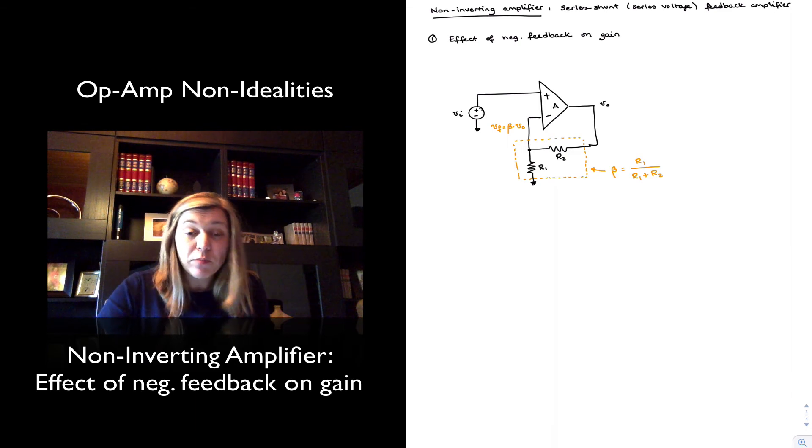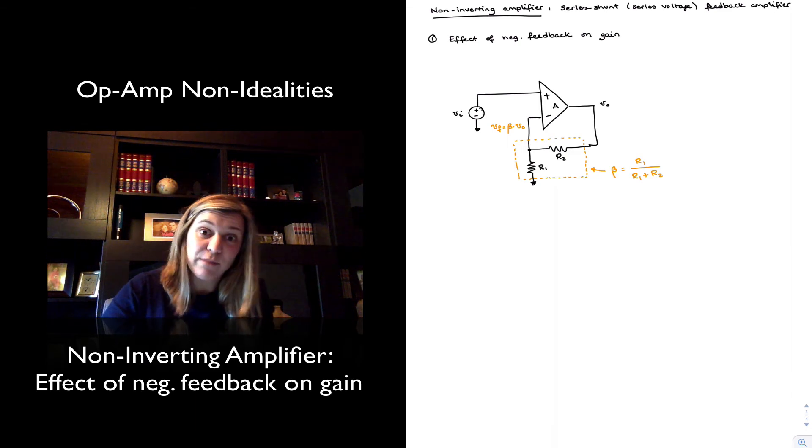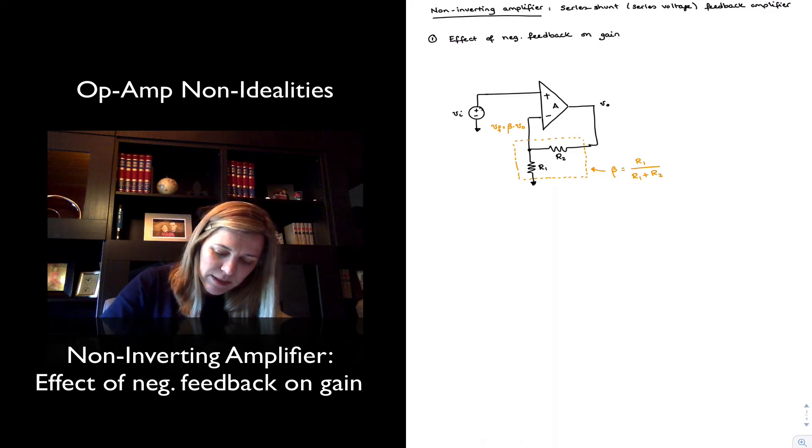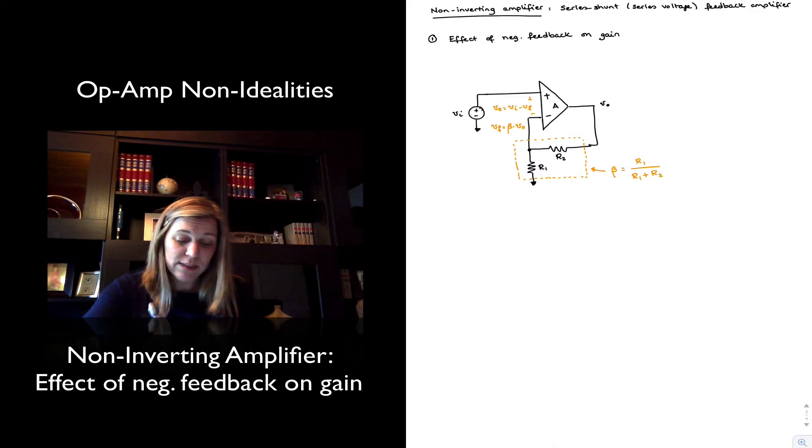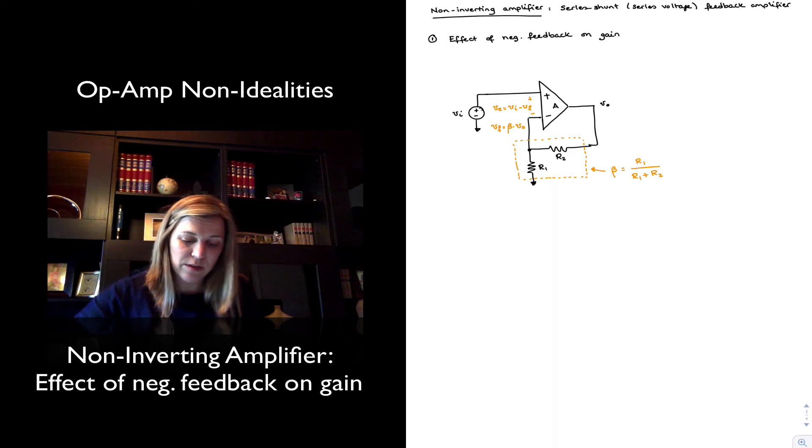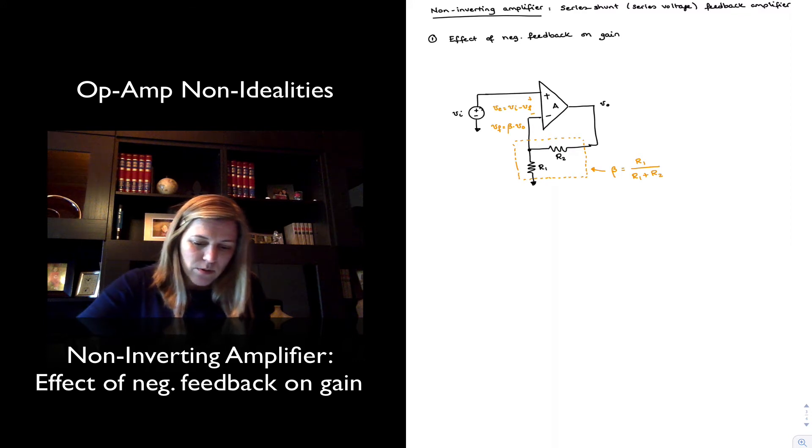Then I can see that my new input at the input of the op-amp, I'm going to have my error signal, which is basically the difference. The error is VIN minus VF, which we can see it is the case. VF is being added in a subtracting manner just by the circuit configuration.